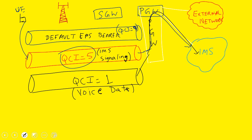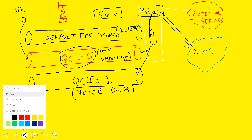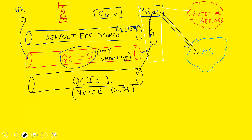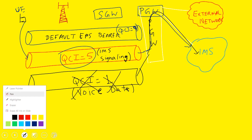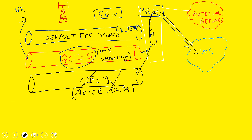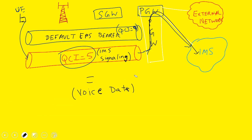After five minutes, when you hang up the call, the QCI1 bearer will be taken down and removed. Once the voice call is done, what will remain are QCI5 and the default EPS bearer, which provide IMS signaling and internet connectivity respectively.